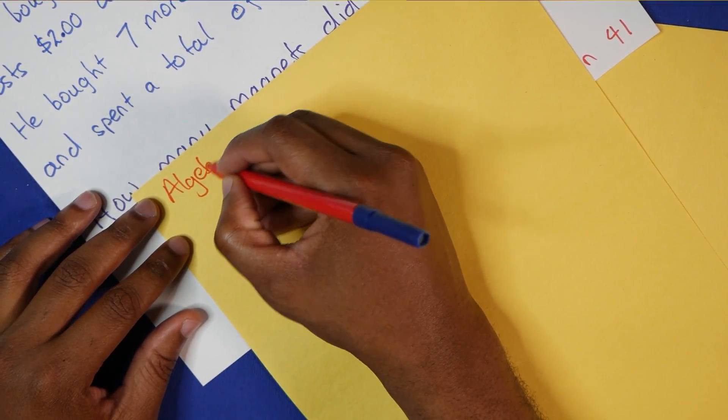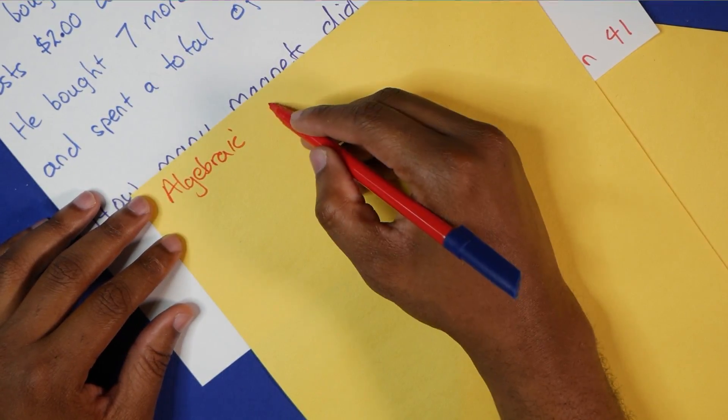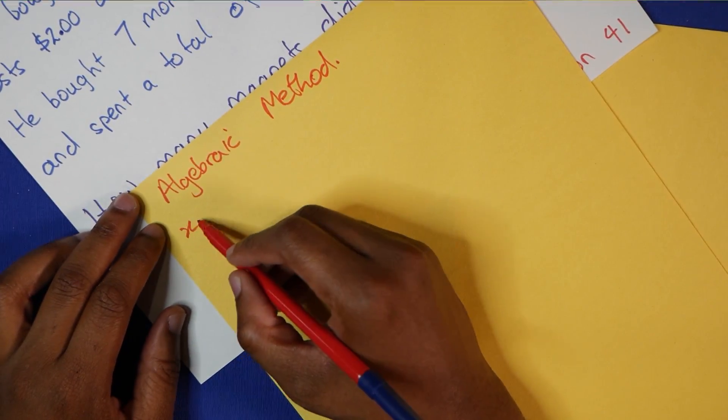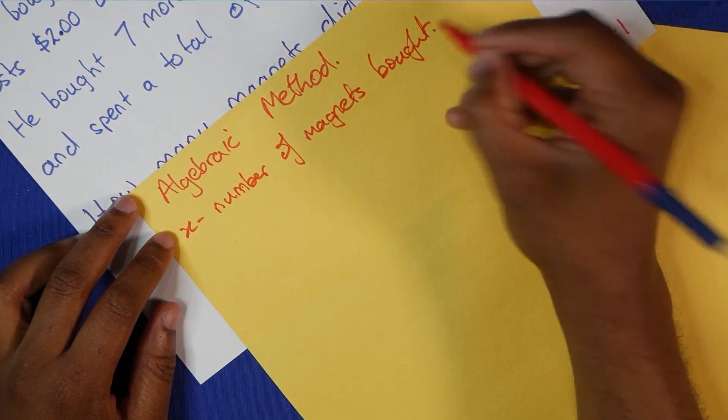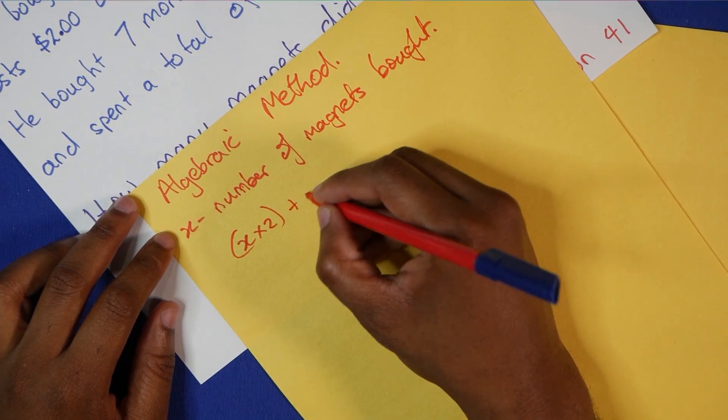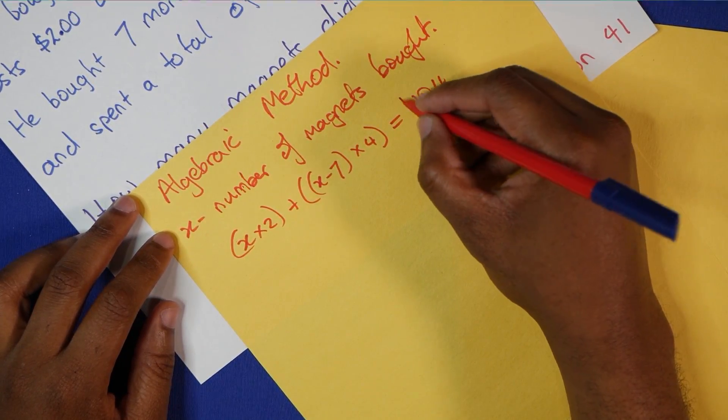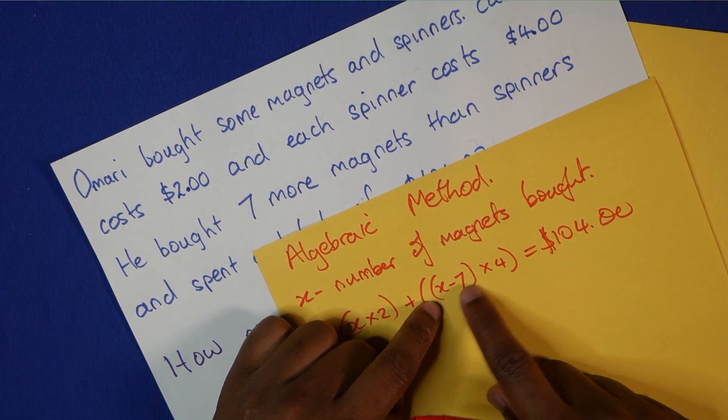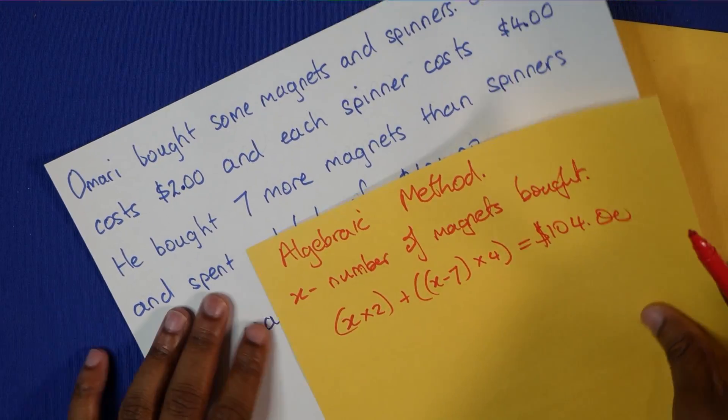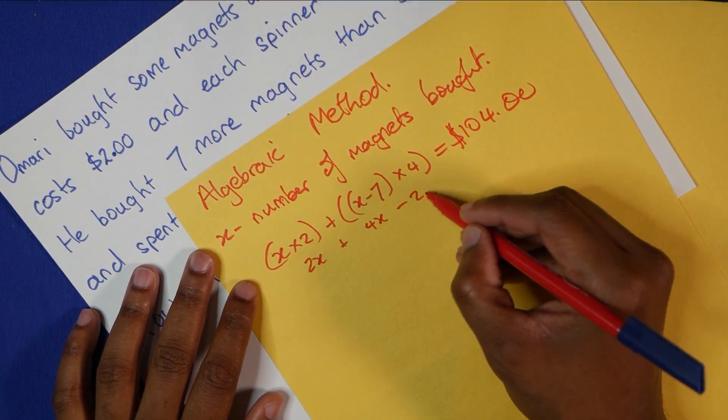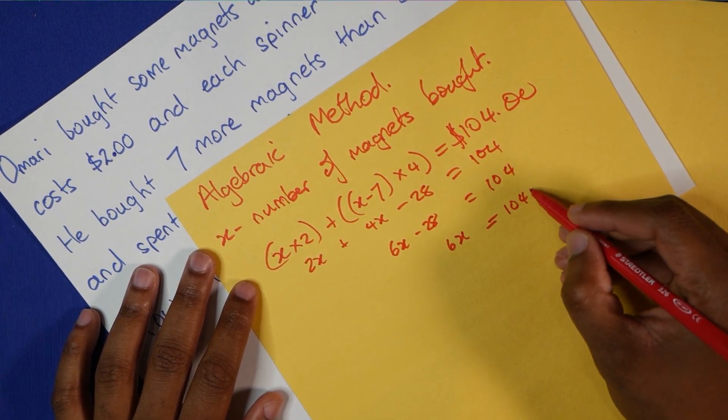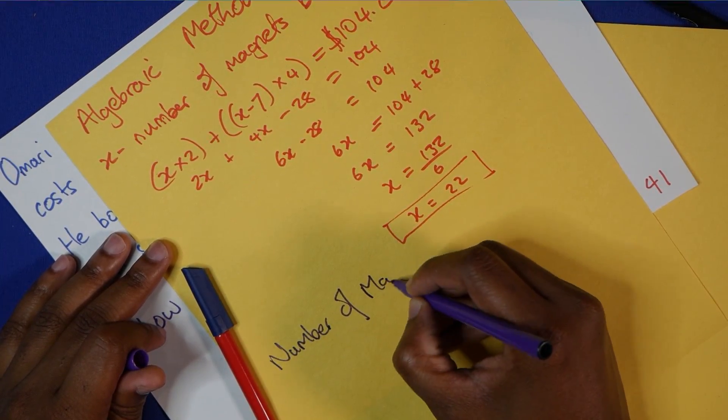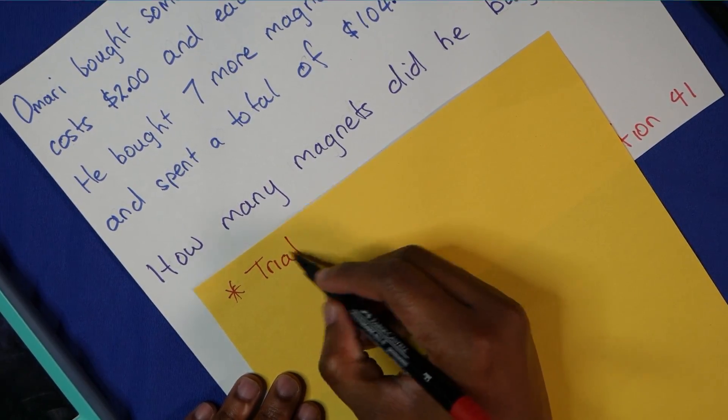The first way I'll solve this question, the natural way to solve this question, is to use an algebraic method, which is not suitable for SEA students. Yes, I know, but I'm a secondary school teacher, so let's just check out what will happen if we set X to be the number of magnets bought. Then we can see that X times 2 plus (X minus 7) times 4 would be equal to the $104. The number of magnets times 2 plus the number of spinners, which is X minus 7, seven less than the number of magnets, times 4, should be equal to the amount of money. We can quickly solve this algebraic expression. This means number of magnets equals 22.